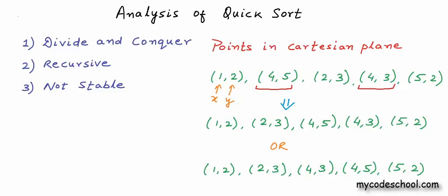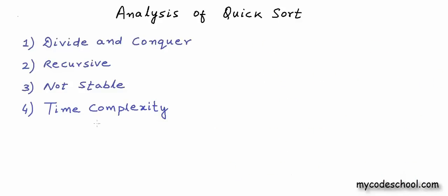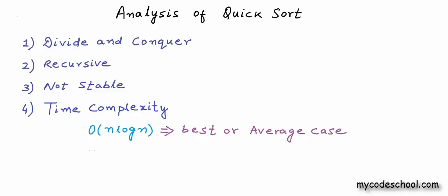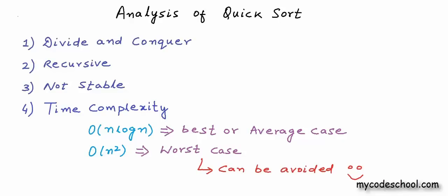Let's now talk about the time complexity of quicksort. Time complexity is O(n log n) in the best or average case, and O(n²) in the worst case. But the worst case can almost always be avoided by using what we call the randomized version of quicksort. Let's now see how quicksort achieves these bounds.